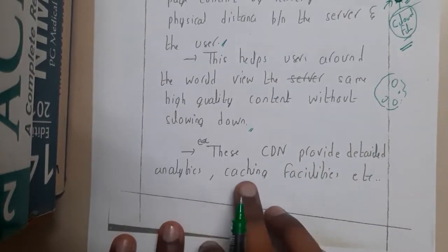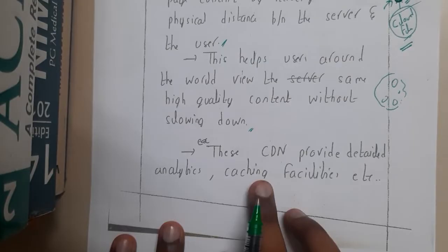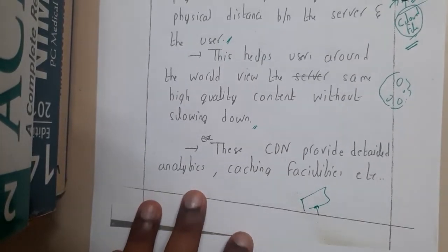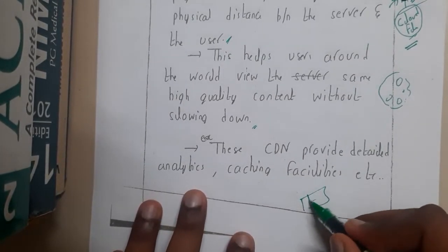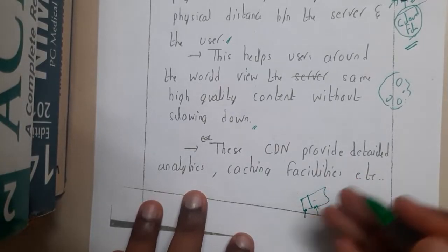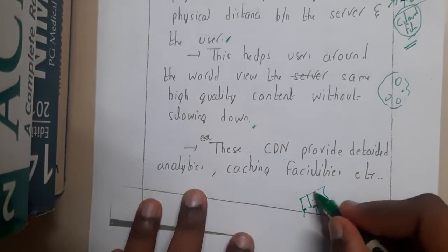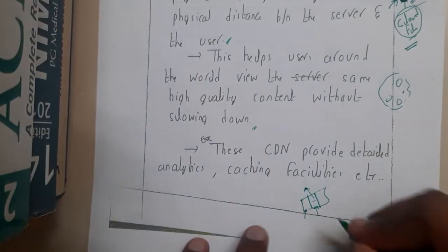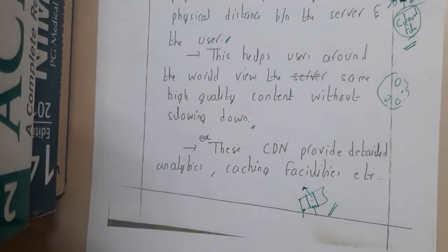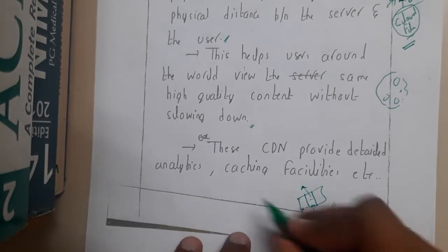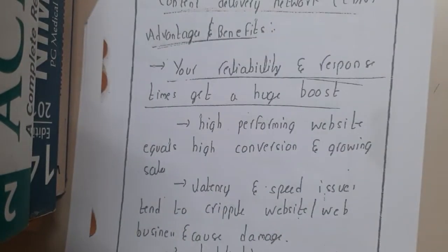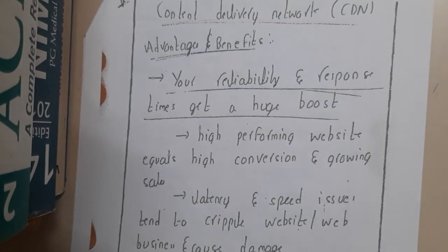CDN providers offer detailed analytics and caching facilities. Whenever I log into my dashboard, it shows how much data is cached, how many downloads have been done, how much data has been transferred from my website — everything is shown. It's a wonderful place to learn about your website. It's an analytical tool as well — it even shows how many visitors came.